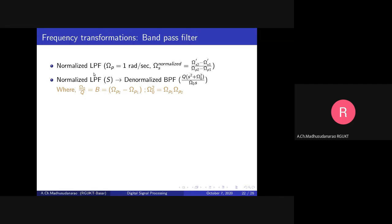Once you have the normalized low pass filter, simply replace S with this band pass transformation expression in H(S), and the result will be the band pass filter with the given specifications: Omega_P1, Omega_P2, Delta_P, Omega_S1, Omega_S2, and Delta_S.